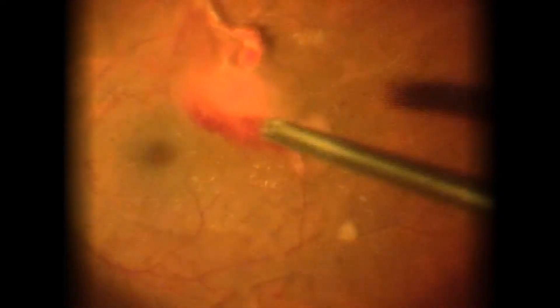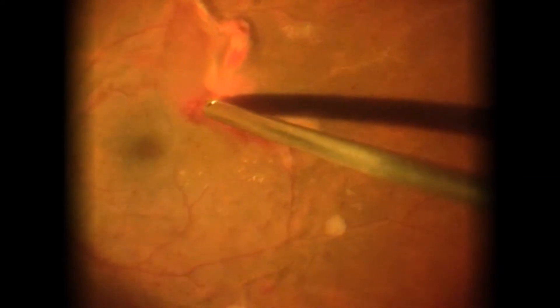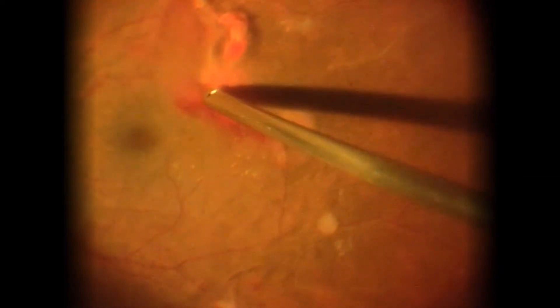The primary goals of diabetic retinal detachment repair is to remove all tractions without creating a rhegmatogenous break. After removal of the anteroposterior traction we then focus on the tangential or circumferential traction.